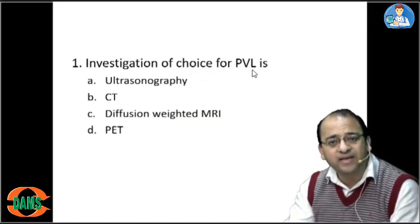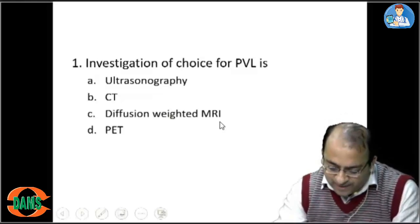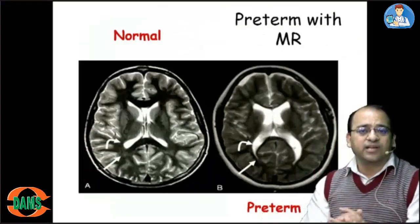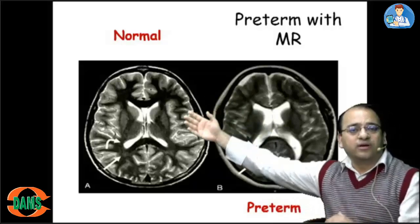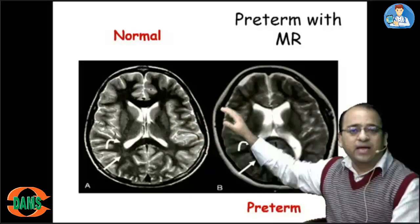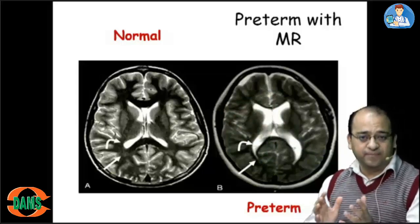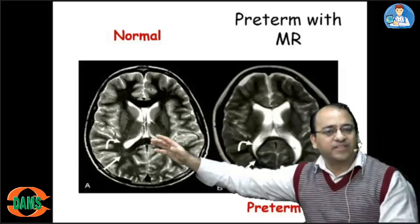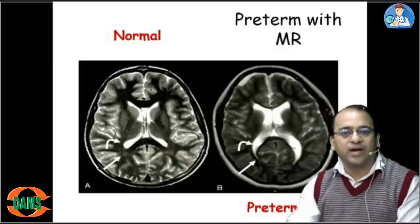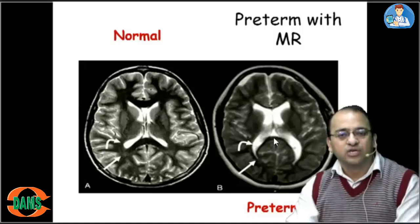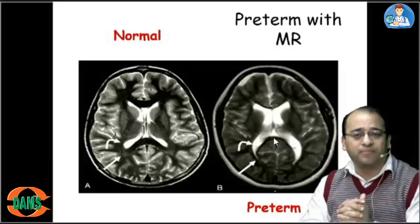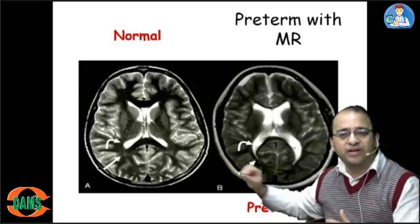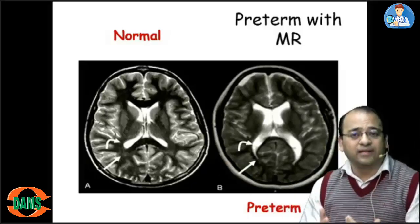For periventricular leukomalacia, remember — whenever a preterm gets an asphyxial insult, the injury which classically occurs is periventricular white matter injury. On your left is a normal MRI of a brain, and on your right is a preterm who got asphyxia. On the left there is more white matter around the ventricles; on the right there is less. This shrinking of white matter around the ventricles is called PVL in preterms.